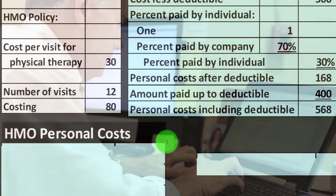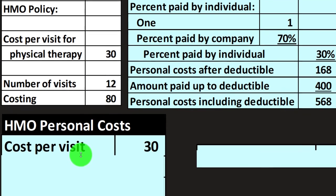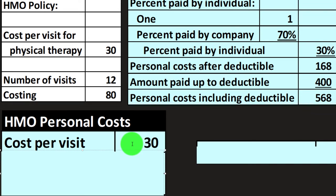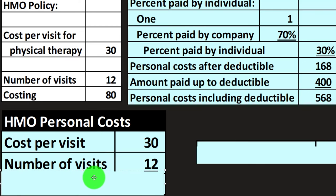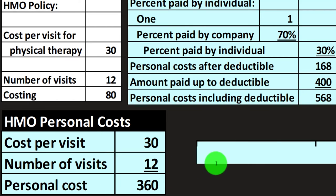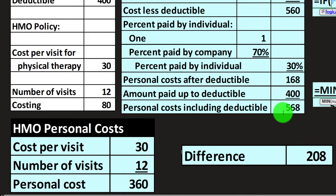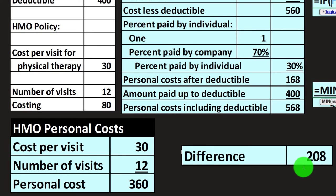The HMO calculation is much more straightforward. Because it's an in-network system, the cost per visit is a flat $30, negotiated through the network. With 12 visits, that comes out to $360 total. So we can see a substantial difference: the first policy costs $568 out of pocket versus the HMO at $360, a difference of $208.